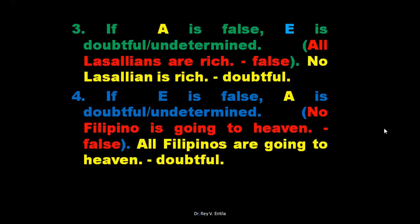Number four: if E is false, A is doubtful. Example: 'No Filipino is going to heaven' — that is false, because we cannot be certain that absolutely no Filipino will go to heaven. And if E is false, our A — 'All Filipinos are going to heaven' — is doubtful, because we cannot be sure that every Filipino will go to heaven, as some have committed grave sins and did not repent.